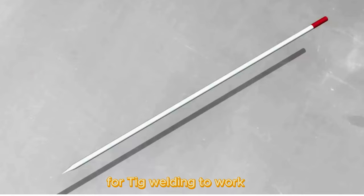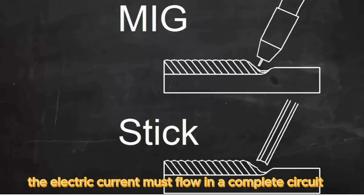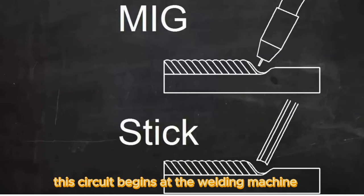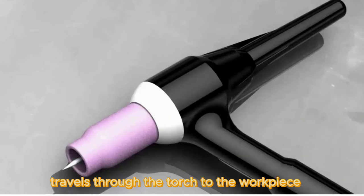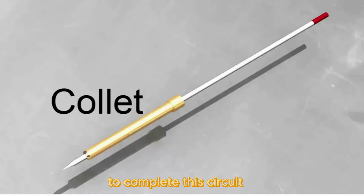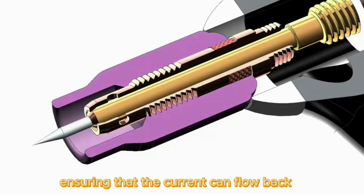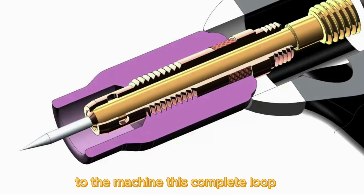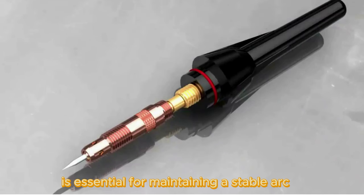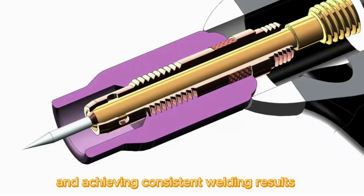For TIG welding to work, the electric current must flow in a complete circuit. This circuit begins at the welding machine, travels through the torch to the workpiece, and returns to the machine. To complete this circuit, a work lead is clamped to the workpiece, ensuring that the current can flow back to the machine. This complete loop is essential for maintaining a stable arc and achieving consistent welding results.